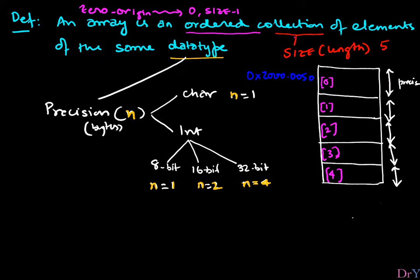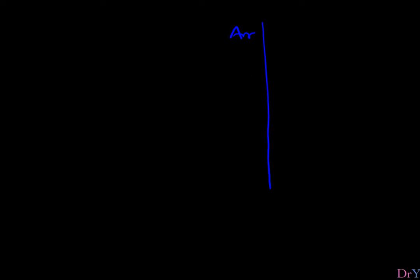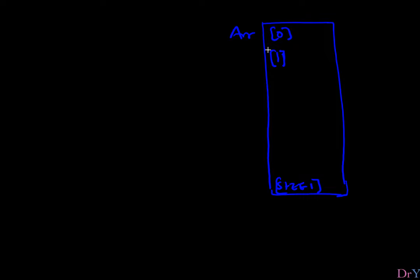For now we focus on simple data types like character and integers. Later we will think about user-defined data types, where an array can be of any arbitrary element size. The key thing is they all have to be of the same data type, which means they all have to be of the same length.